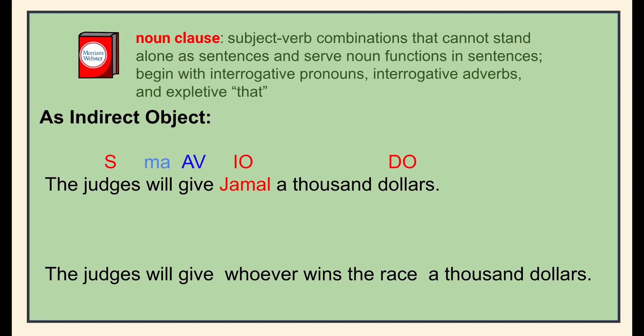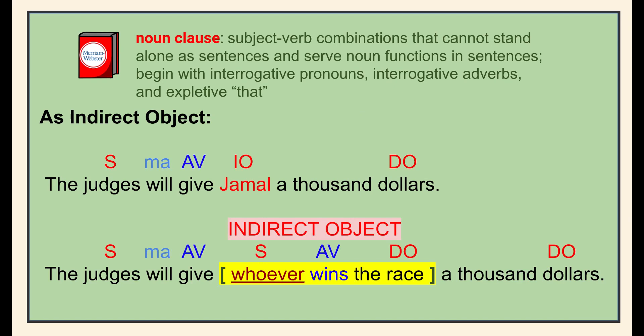Our verbs are 'will give' — who or what will give? The judges. What was given? A thousand dollars. Who or what received the direct object? Here we have an indirect object: 'Jamal.' In the second sentence, 'whoever wins the race' acts as the indirect object because it receives the direct object 'dollars.' In the noun clause, the interrogative pronoun 'whoever' both introduces the noun clause and functions as the subject of the verb 'wins.'